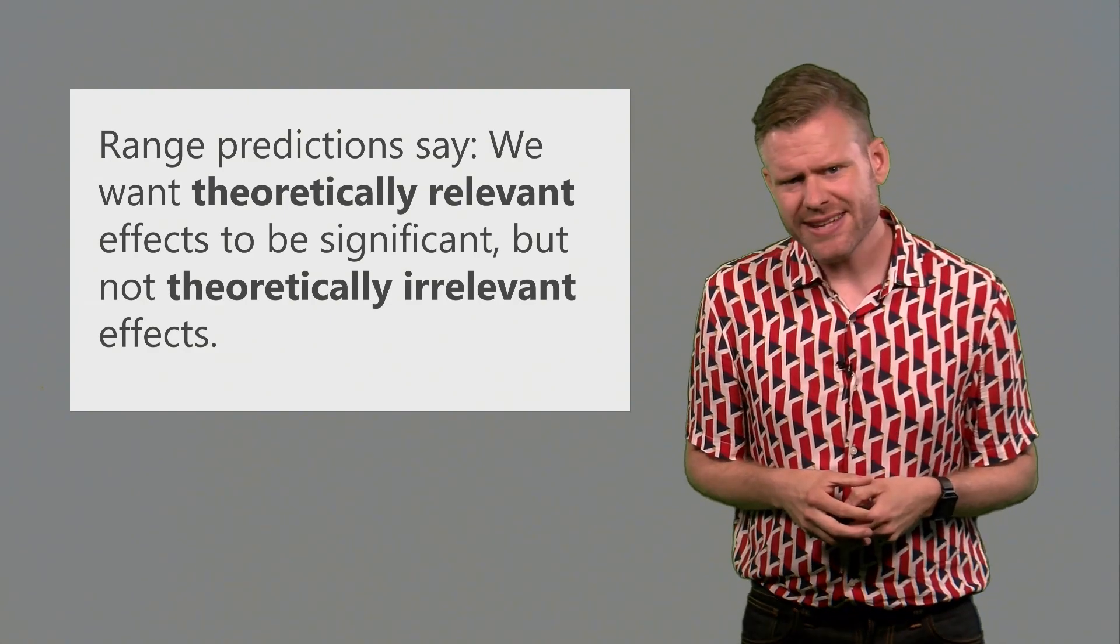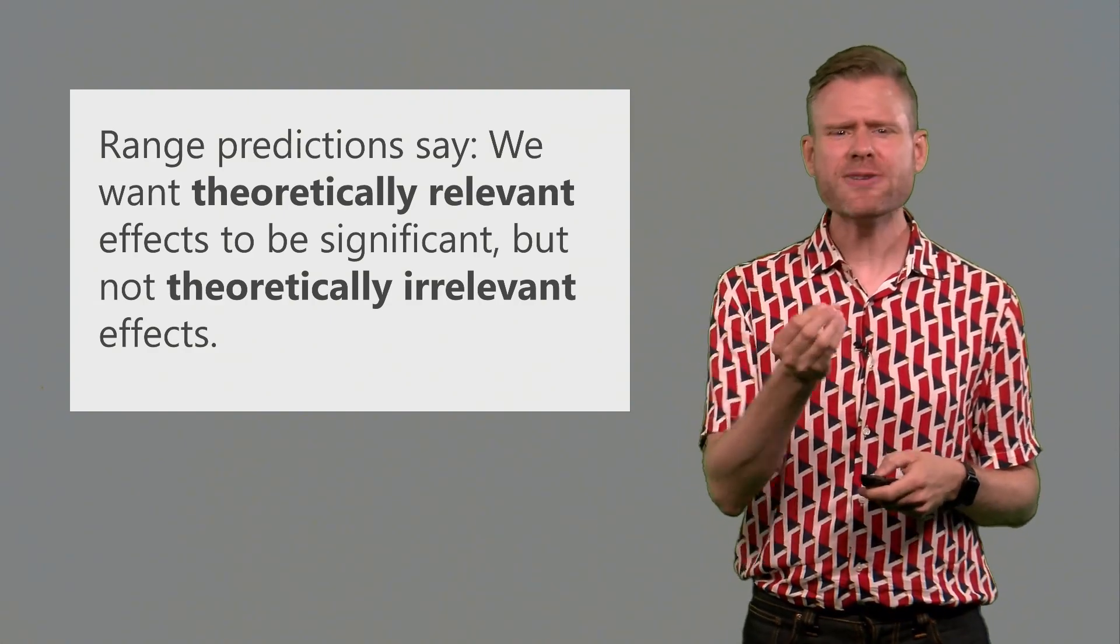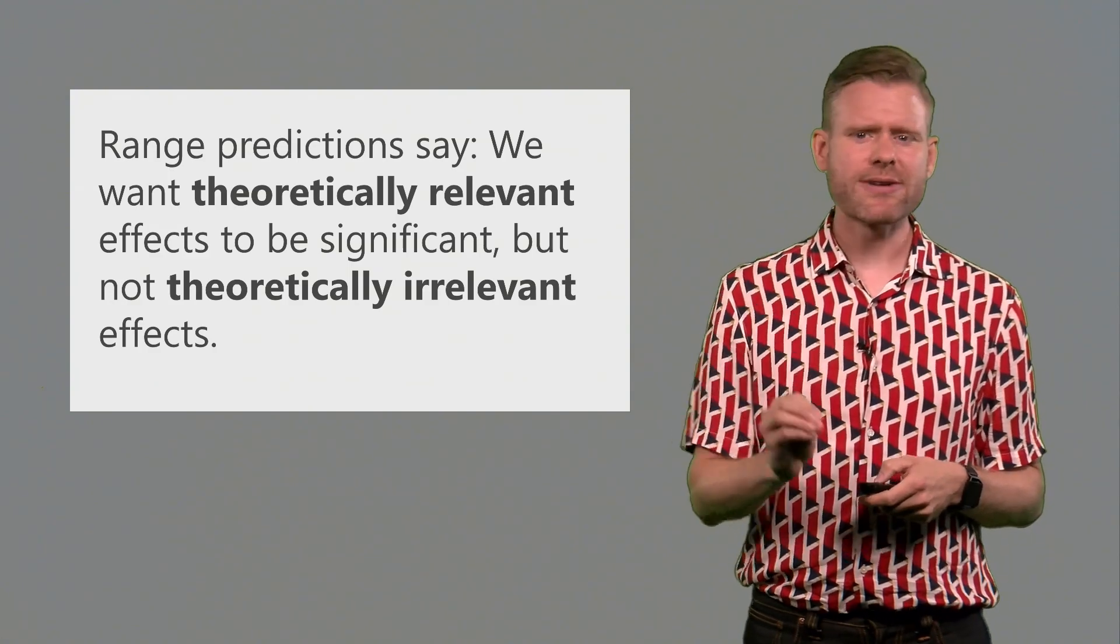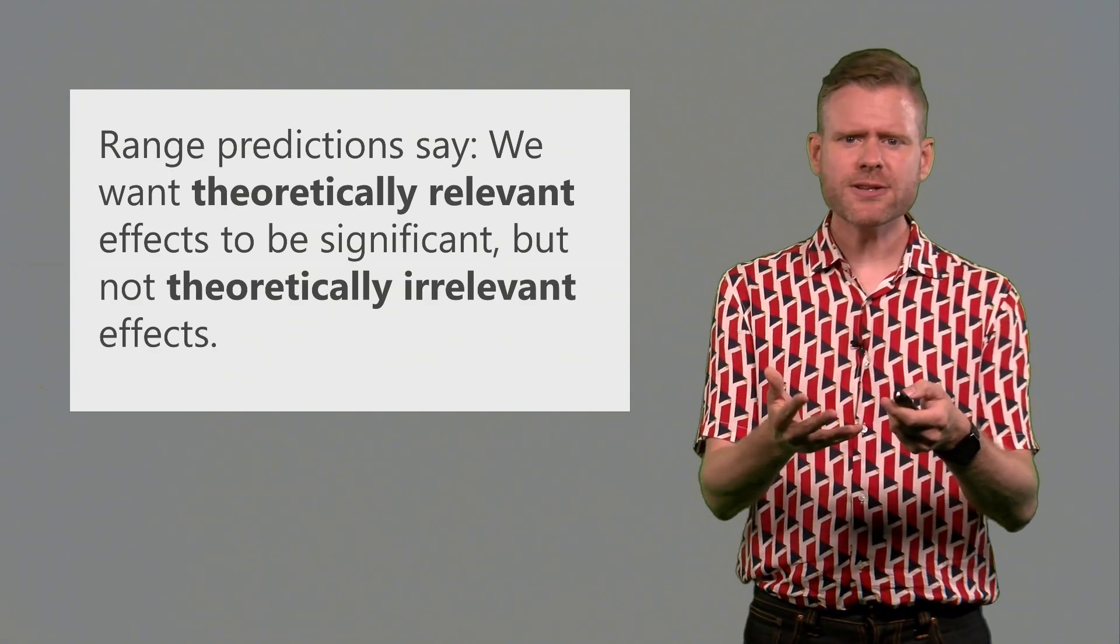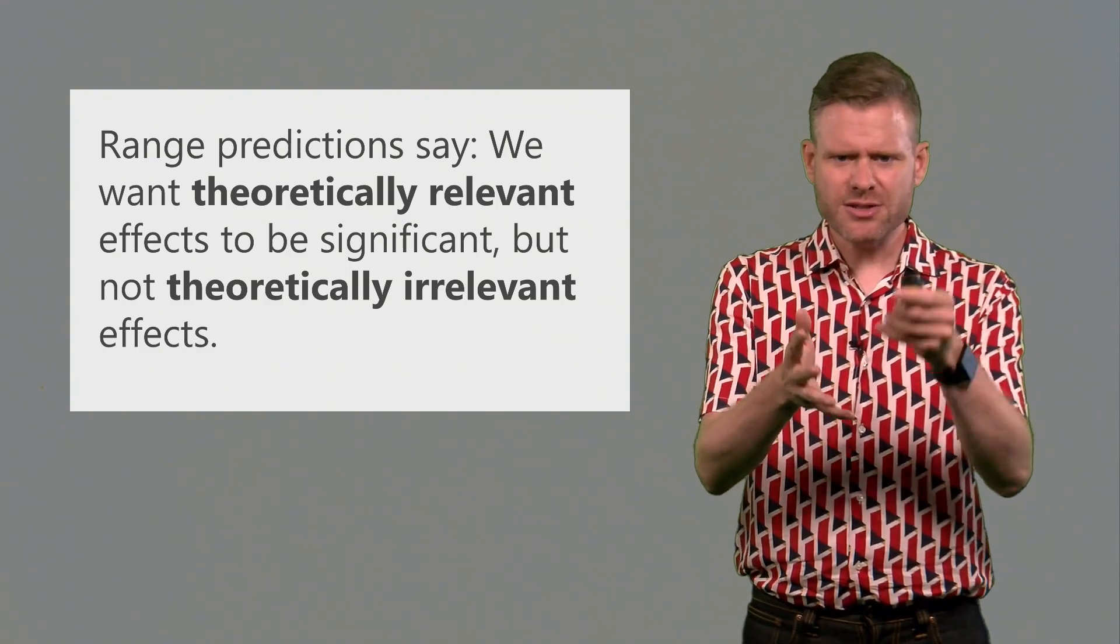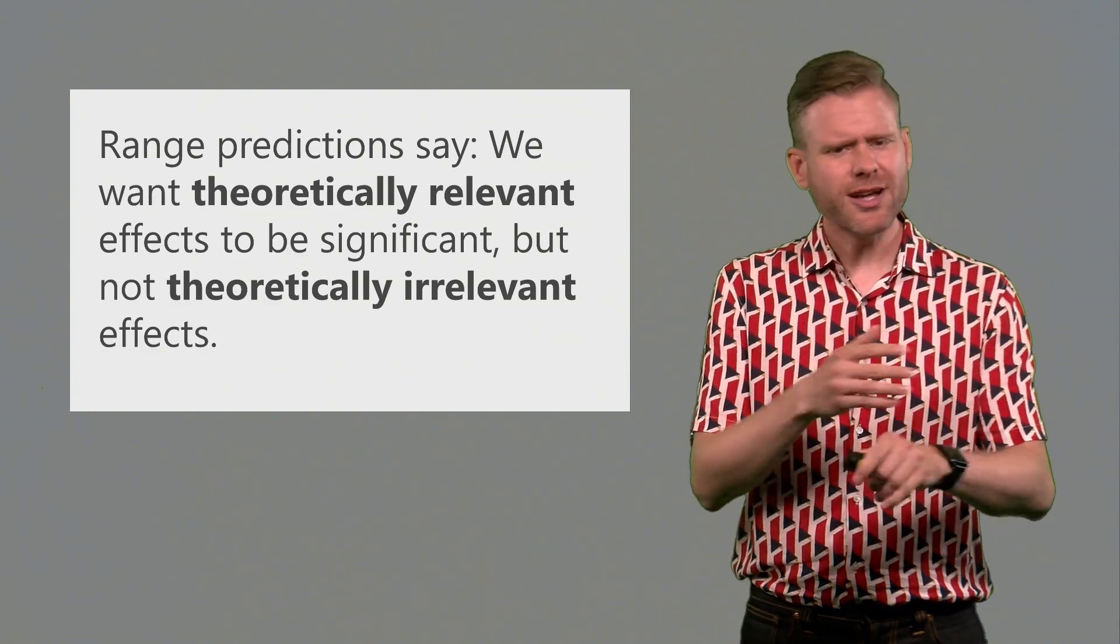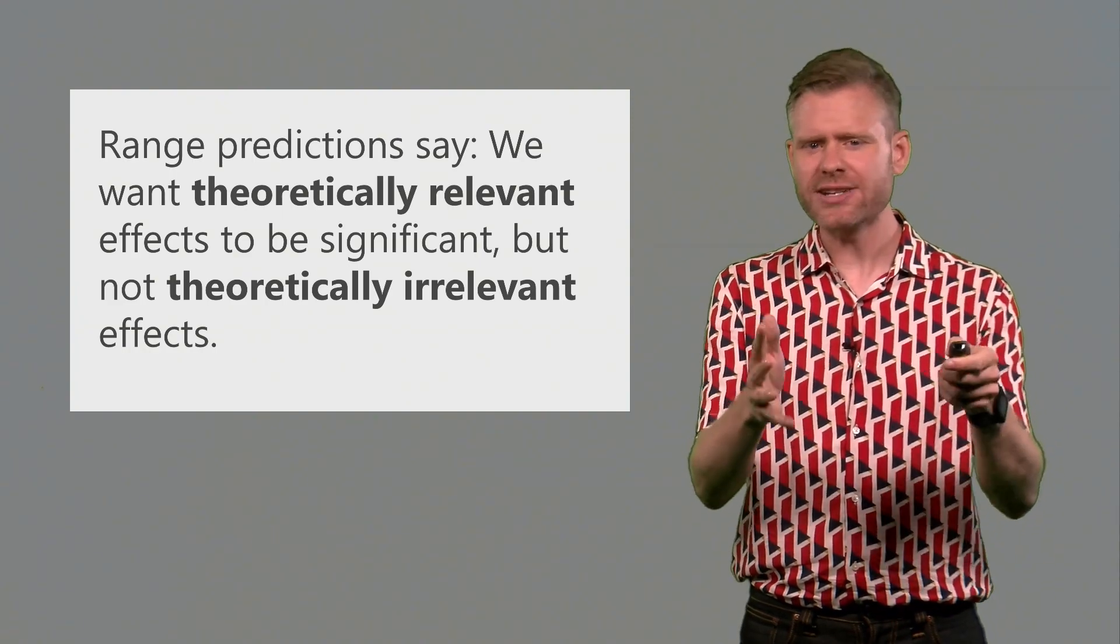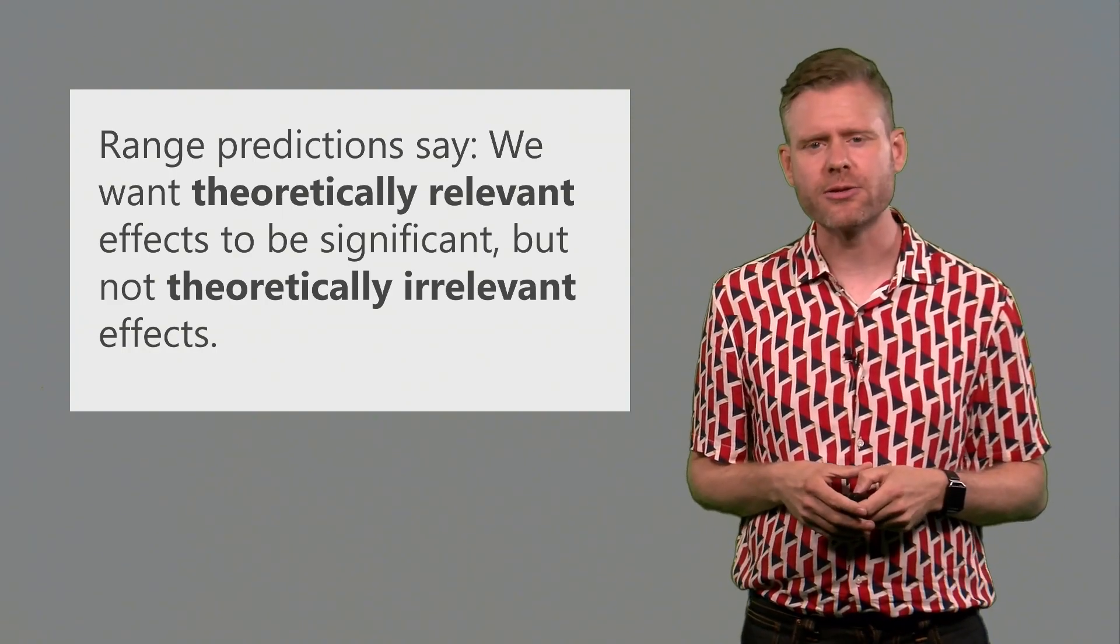Range predictions say we want theoretically relevant effects to be significant, but not theoretically irrelevant effects. We have certain predictions that we want to be true, but only predictions within a certain range. Not anything goes, but some specific values that would actually be in line with what our theory is predicting.